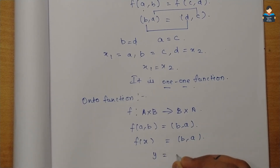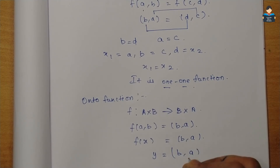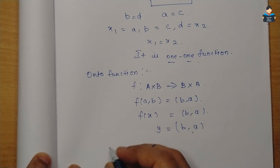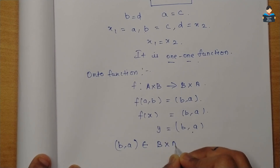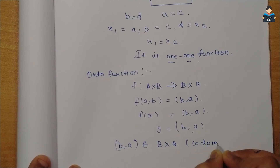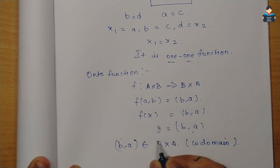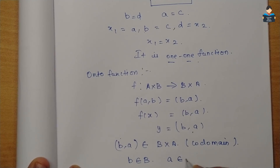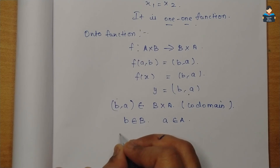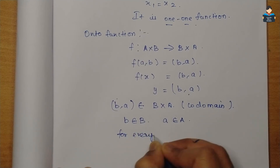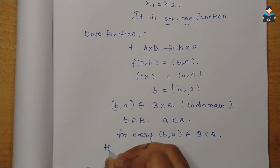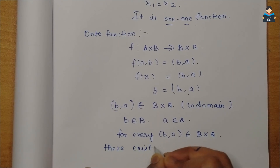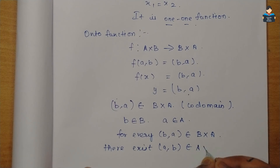Let y = (b, a) belonging to B×A. We need to find x = (a, b) in A×B such that f(x) = y. Since B belongs to set B and A belongs to set A, for every (b, a) belonging to B×A, there exists (a, b) belonging to A×B.